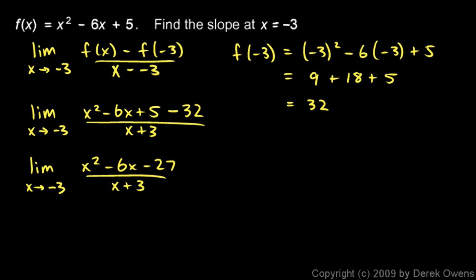Again, if we were to actually plug in a negative 3 here and here and here, we'd end up with 0 over 0. So instead, we try to simplify this expression. And we get the limit as x approaches negative 3. And this factors as x plus 3 times x minus 9. And we divide by x plus 3. And these guys cancel out.